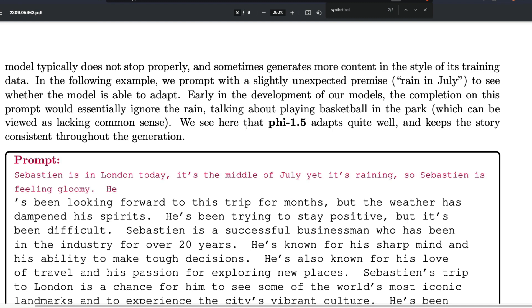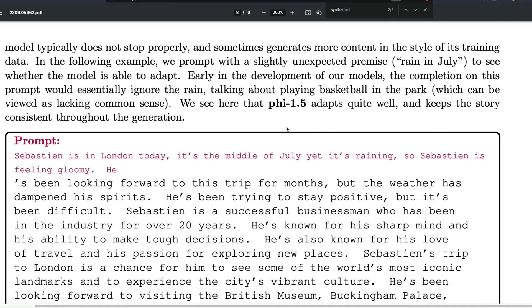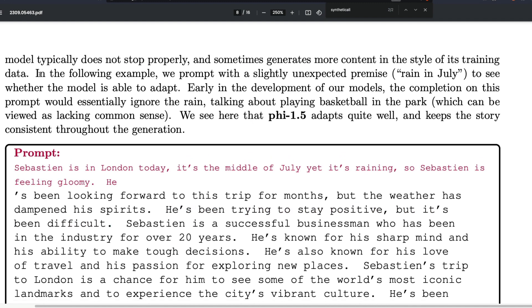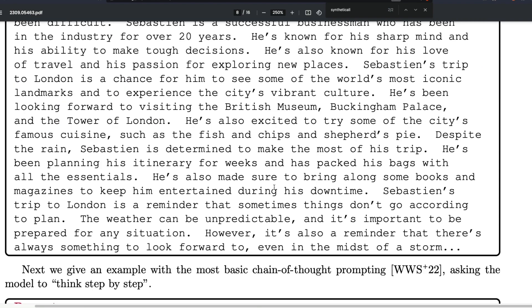Let's look at the examples of how Phi 1.5 is actually doing in terms of certain questions. I'm definitely planning to try out this model. But if you see the questions that they put it on the paper. So what they are trying to do is they're trying to give a scenario that is unexpected, a premise. Sebastian is in London. It's a middle of July, yet it is raining. So Sebastian is feeling gloomy. He remember, this is a next word prediction model. This is not an instruct fine tuned model. So premise is here is that rain in July is uncommon. It's an unexpected premise. And despite that, this model has performed really good. For example, it says been looking forward to this trip for months, he's been trying to stay positive, but it has been difficult. So it managed to understand that this is an unexpected premise, and it managed to generate a coherent story. So even when the model has not seen or not seen this kind of premise and unexpected premise, the model managed to adapt well and then created a coherent story, which is quite amazing.